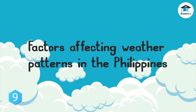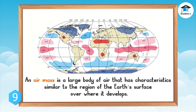Factors affecting weather patterns in the Philippines: An air mass is a large body of air that has characteristics similar to the region of the earth's surface over which it develops. Air mass that develops over tropical oceans is hot and humid, while air mass that develops over continents covered with ice is cold and dry. When you observe a change in weather from one day to the next, it is due to the movement of air masses.